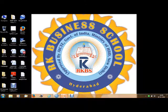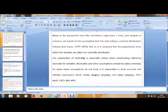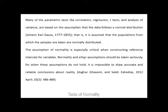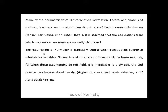Many of the parametric tests like correlation, regression, t-test, and analysis of variance are based on the assumption that the data follows a normal distribution — that is, it is assumed that the populations from which the samples are taken are normally distributed. The assumption of normality is especially critical when constructing reference intervals for variables. Normality and other assumptions should be taken seriously, because when these assumptions do not hold, it is impossible to draw accurate and reliable conclusions about reality.